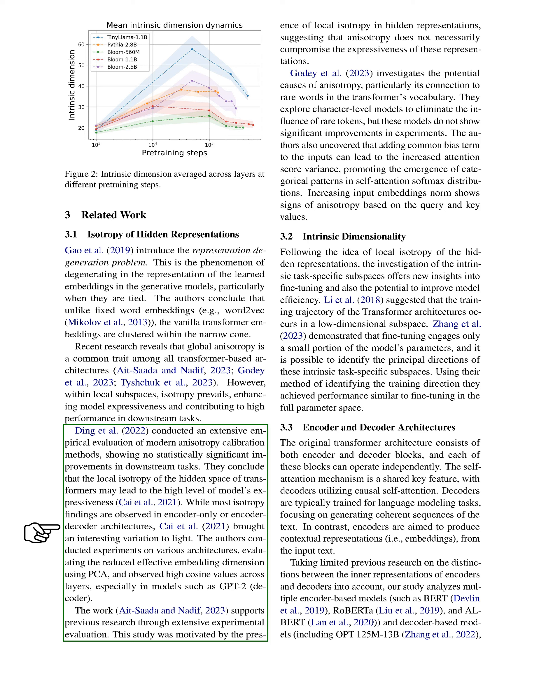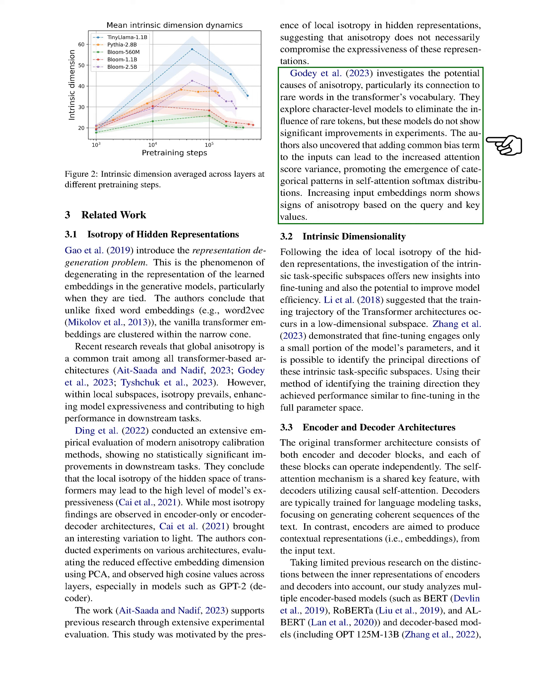Interestingly, we've found that this isotropy is not just present in encoder-only or encoder-decoder architectures. We've conducted experiments on various architectures and found high cosine values across layers, especially in models like GPT-2, which is a decoder model. We've also looked into what might cause anisotropy, particularly its connection to rare words in the transformer's vocabulary. We tried using character-level models to eliminate the influence of rare tokens, but these models didn't show significant improvements in our experiments.